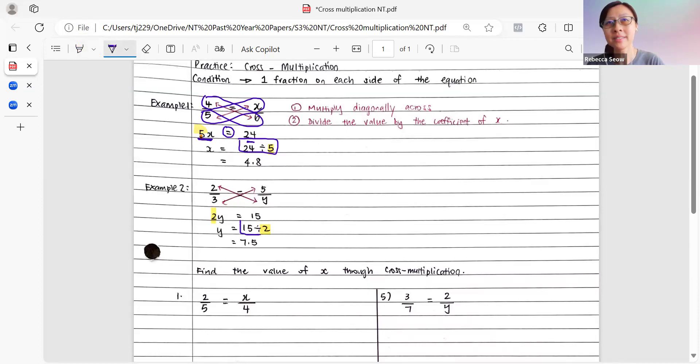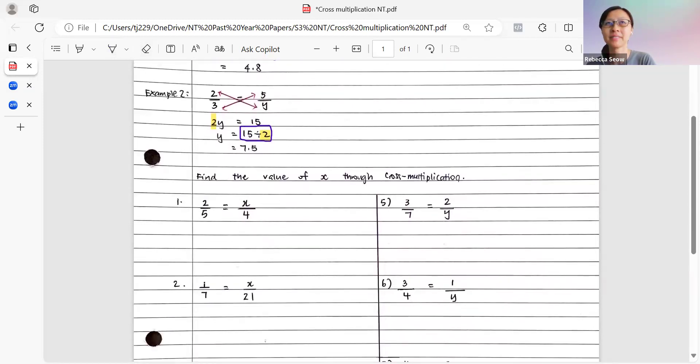Again, with this, we press these values into the calculator, and we will get 7.5. Now let's get started with some practice questions. And from there, it will give us a better idea of how to do cross multiplication. If you already understood the examples that I've shared earlier on, you may want to pause the video. Try out these six questions on your own first. And thereafter, play the video in continuation to see whether your answers match mine.